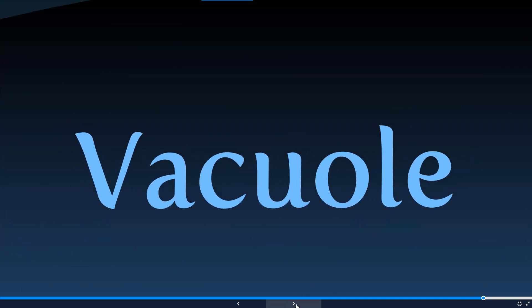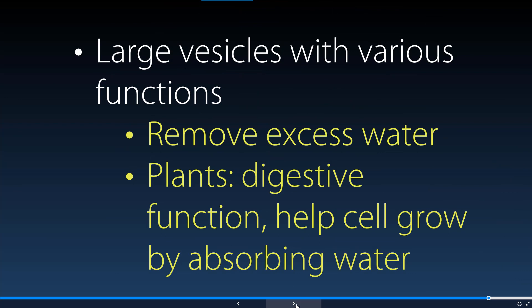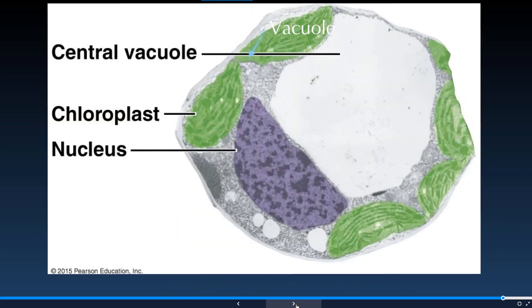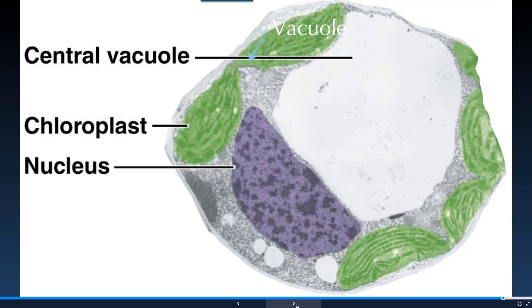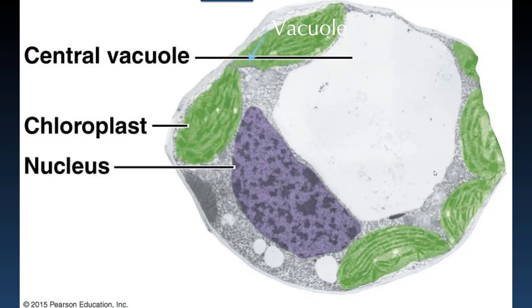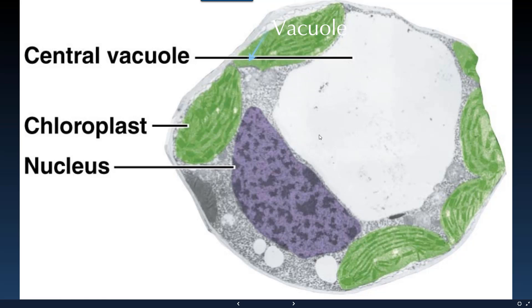We also find vacuoles — large vesicles with various functions. One is digestion in plants; another is removing excess water. In plants, they are really important for helping to manage water by absorbing it. The central vacuole in plant cells, seen as a large white space in diagrams, can get quite large because it holds and stores so much water. In comparison, animal cells can't really manage too much water, but plants are well-adapted to storing it for later.